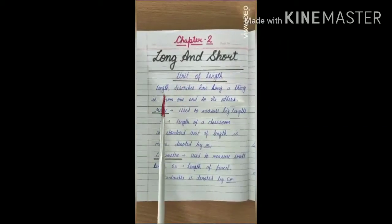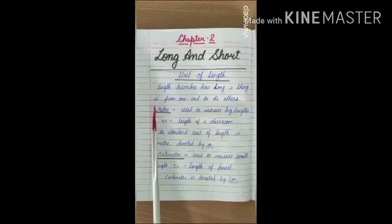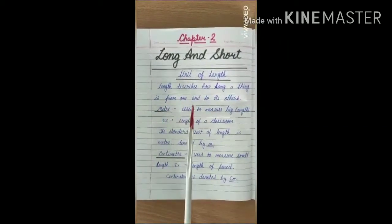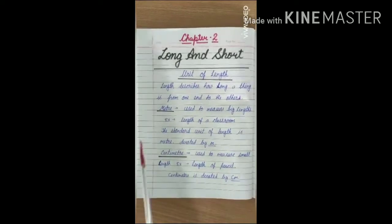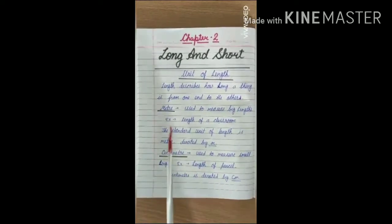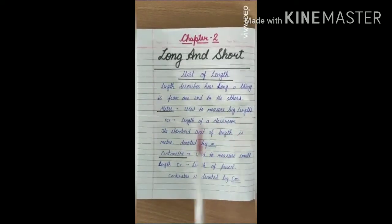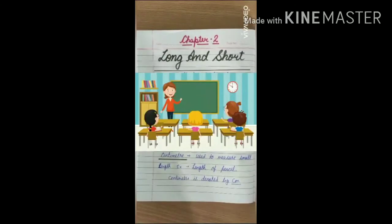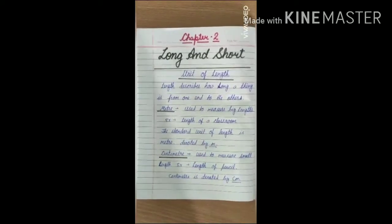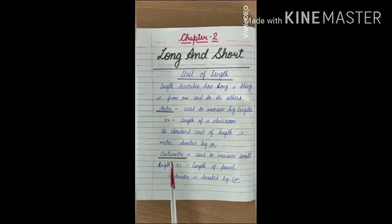Unit of length. Length describes how long a thing is from one end to the other. Meter is used to measure big length. For example, the length of a classroom. The standard unit of length is meter, denoted by m.